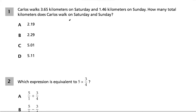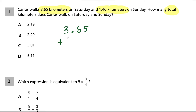Question 1. Carlos walks 3.65 kilometers on Saturday and 1.46 kilometers on Sunday. How many total kilometers does Carlos walk on Saturday and Sunday? For this question we're looking for the total amount of kilometers, so we're going to take these two values and add them together. We're doing 3.65 kilometers plus 1.46 kilometers. Notice that all our answer choices are just numbers, but the units are going to be kilometers.